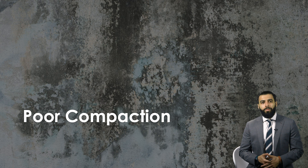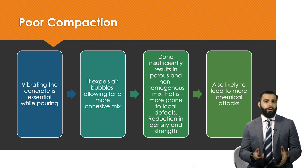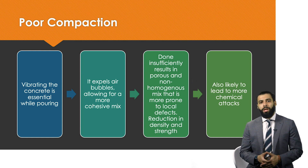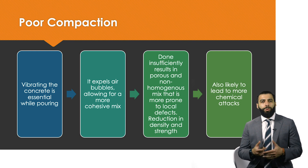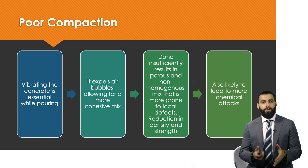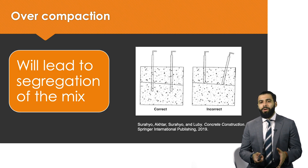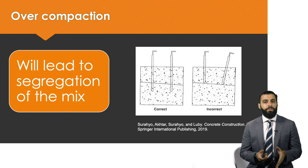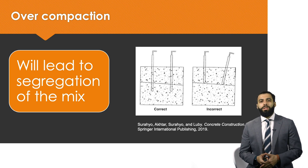The third construction defect is poor compaction — poor vibration of the concrete. It's important to vibrate your concrete mix because this helps get rid of air bubbles. Failure to do so results in a permeable, excessively porous, and non-homogeneous mix, which is structurally weaker and susceptible to excessive chemical attacks. However, if you over-compact by increasing the vibration rate above a certain limit, you will get segregation. The correct way is to insert the vibrator straight into the concrete mix and avoid holding it at a diagonal, to prevent segregation.